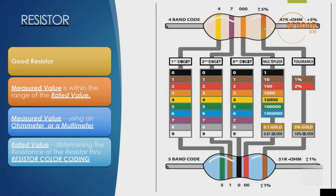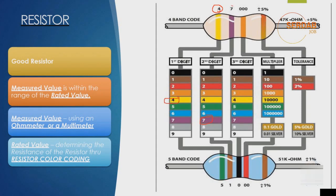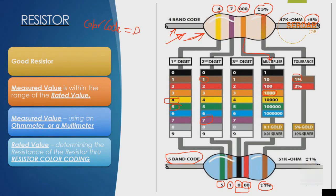You can determine the resistance using the resistor color coding. Each color indicates a digit value. In a four-band resistor, the first two bands are digits, the third is a multiplier, and the fourth is tolerance. For example, yellow means the digit 4 and purple means the digit 7. You need to match the color-coded value with the digital multimeter reading. If the two values match, the resistor is working correctly.